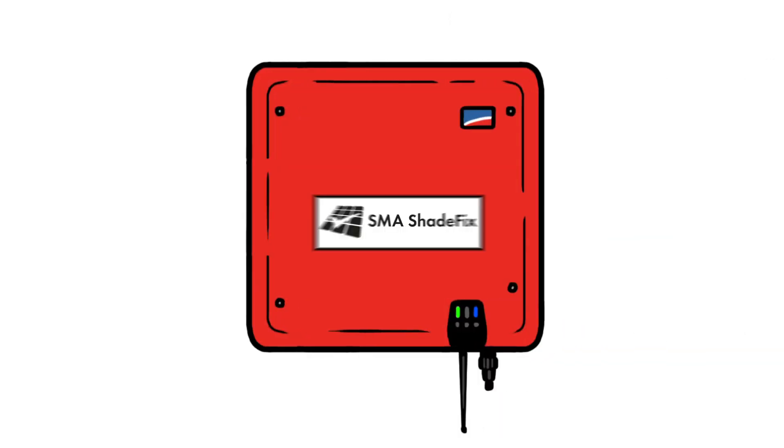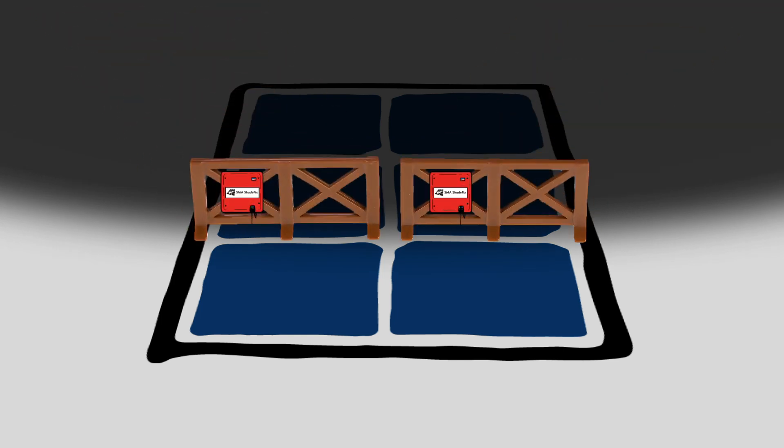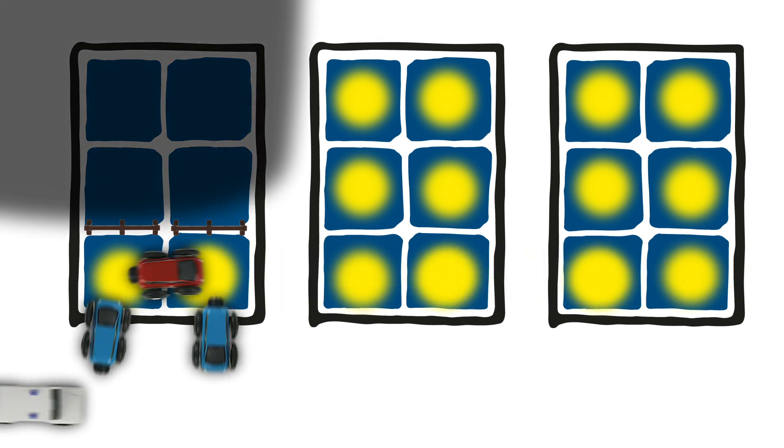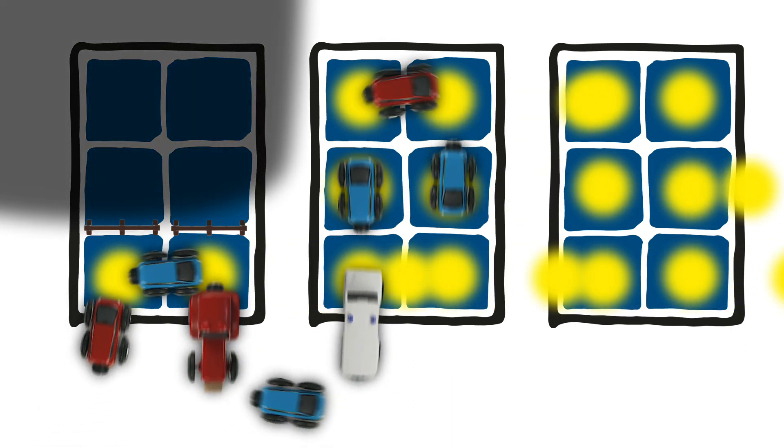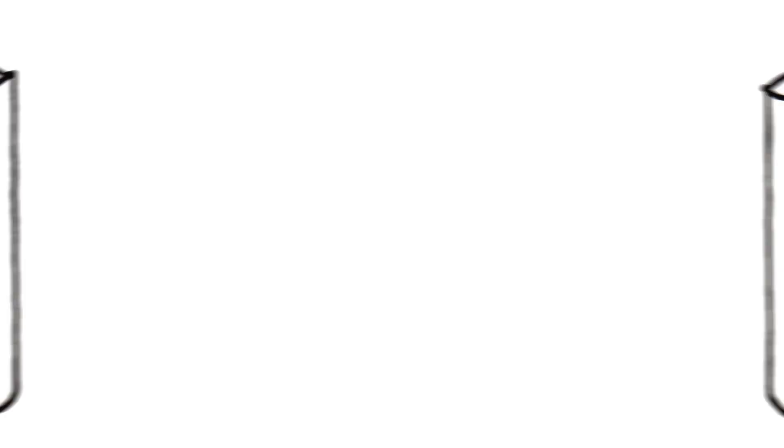But it's not like that with SMA ShadeFix. This shade management function automatically closes shaded lanes. The cars are diverted and able to bypass shaded lanes at full speed, harvesting as much energy as they can. It's easy as that.